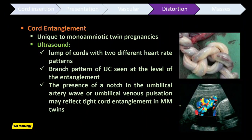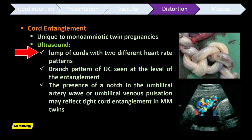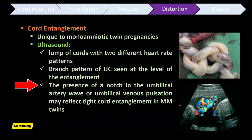Cord entanglement is a classic feature of monoamniotic twin pregnancies. It can be diagnosed by 2D ultrasound, color, and pulse Doppler. On ultrasound, a lump of cords with two different heart rate patterns can be found. A branching pattern of the umbilical cord is seen at the level of entanglement. A notch in the umbilical artery wave or umbilical venous pulsation may reflect tight cord entanglement in monochorionic monoamniotic twins.